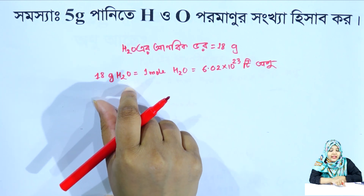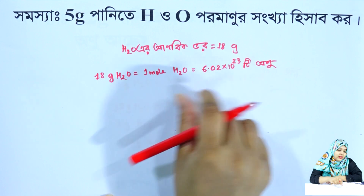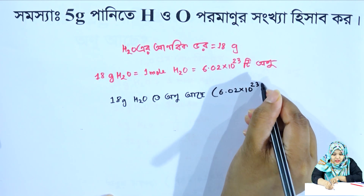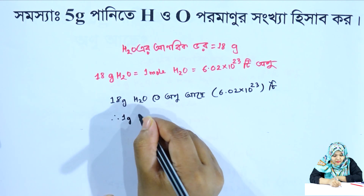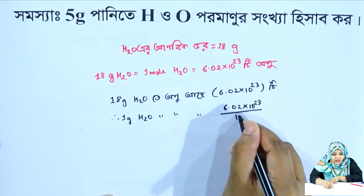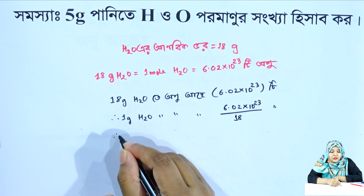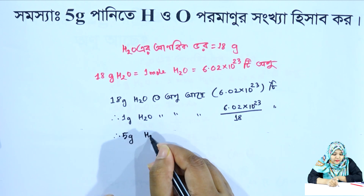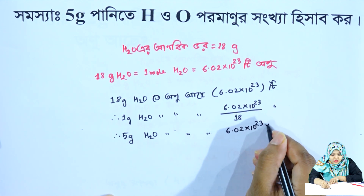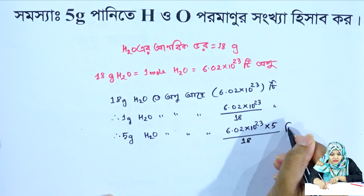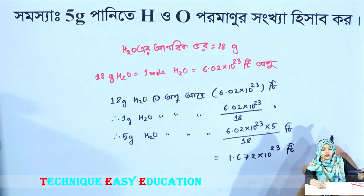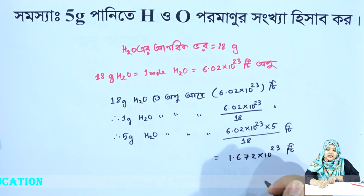For 1 gram of water, the number of molecules is 6.02 into 10 power 23 divided by 18. For 5 gram of water, the number of molecules is 6.02 into 10 power 23 into 5 divided by 18, which equals 1.672 into 10 to the power 23. So, 5 gram of water contains 1.672 into 10 power 23 molecules.